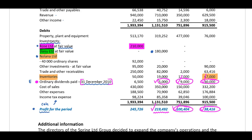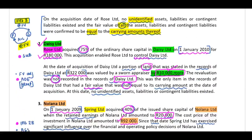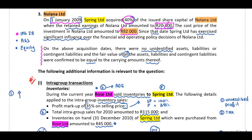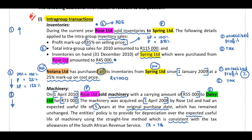We are able to move on to our next section. In terms of our intra-group transactions, we can tick off number three — intra-group transactions. During the current year, Rose Limited sold inventories to Spring Limited. We have identified that Rose is our subsidiary and Spring is the parent. They've indicated a profit markup of 35% on selling price.